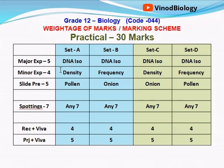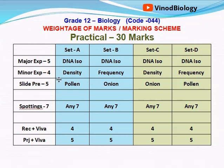The minor experiment will be either density or frequency — that is second or third. The slide will be either pollen or onion. So Set A could be: density with pollen; Set B: density with onion; Set C: frequency with onion; Set D: frequency with pollen. These are four different possible set combinations. Only the minor experiment and slide preparation are interchanged between sets.